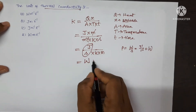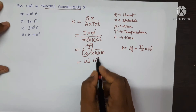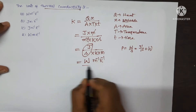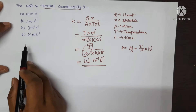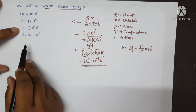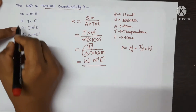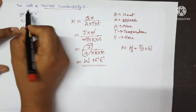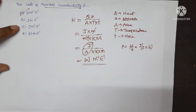Now here it is meter inverse 1 and Kelvin inverse 1. This is the SI unit: Watt meter inverse 1 and Kelvin inverse 1. So A is the correct option. Let's see the next question.